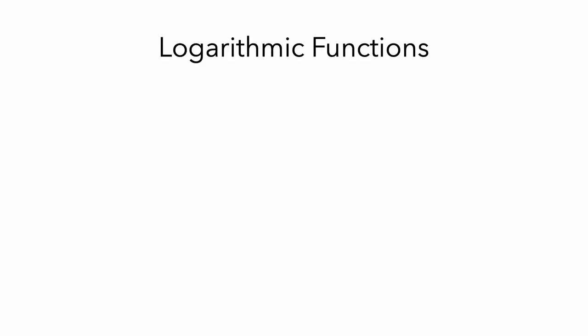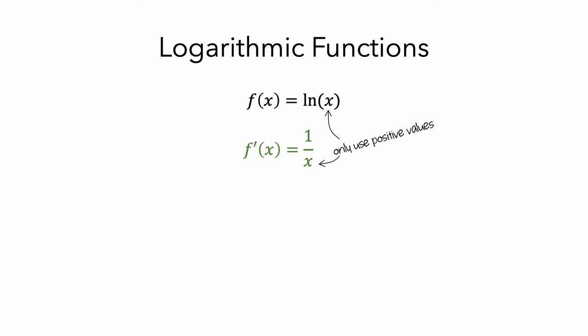Next, we'll look at derivatives for logarithmic functions. Probably the most common logarithmic function you'll see is called the natural log, written f of x equals ln of x. The derivative of f of x is f prime of x equals 1 over x. One important thing to note is that you can only take the log of positive numbers, so the domain of the derivative function is only positive values of x.